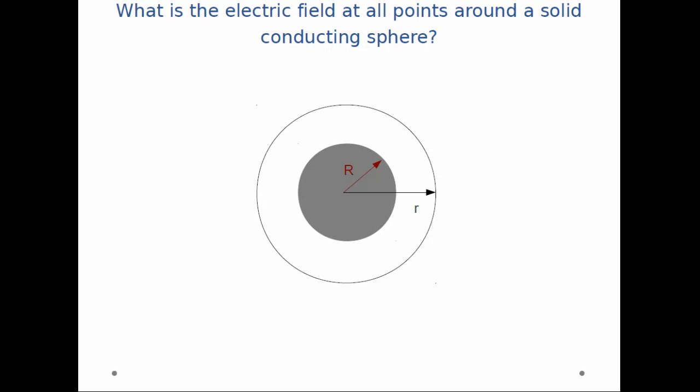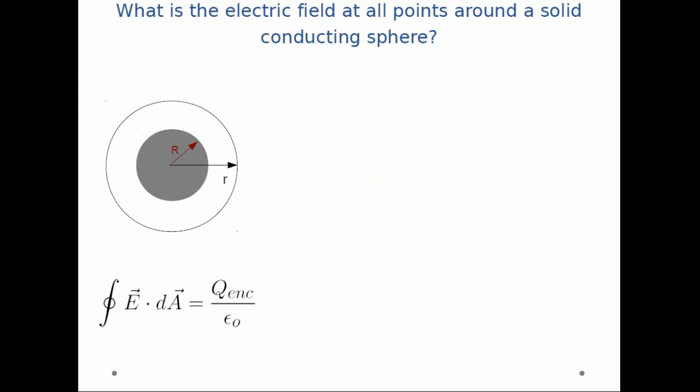So first things first, I draw a Gaussian surface. The surface has a radius little r. And I write out Gauss's law, E dot dA is equal to q enclosed over epsilon naught. And now I can start doing the analysis. So first, I can break up the dot product into pieces.